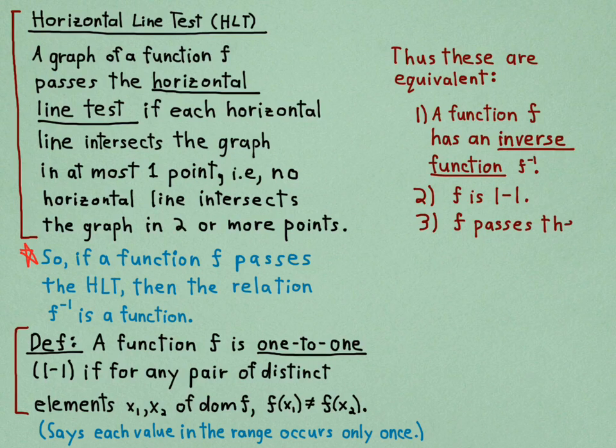What does it mean to be equivalent? For example, if a function f has an inverse function f⁻¹, then f is one-to-one and it passes the horizontal line test. If f passes the horizontal line test, then f is one-to-one and it has an inverse function, etc.